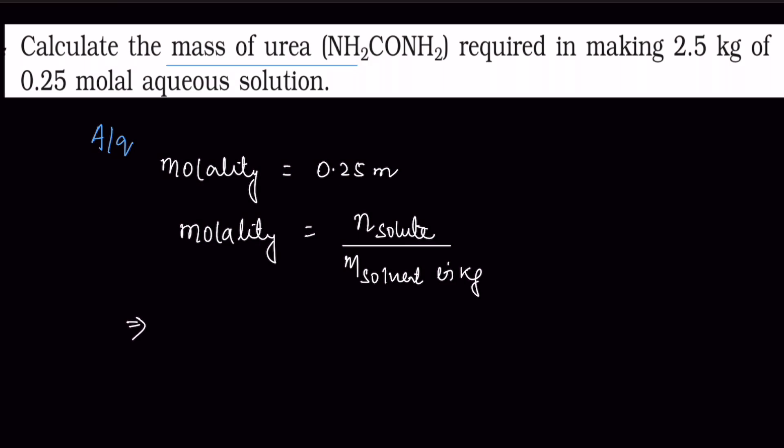So molality we can write as 0.25. Mole is n, we don't know the mole of urea, and mass of the solvent is 2.5 kg.